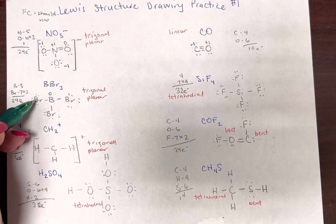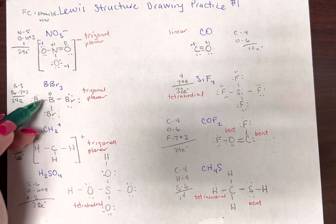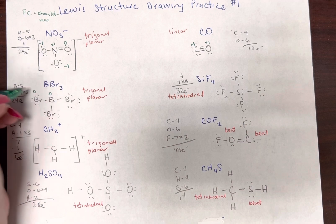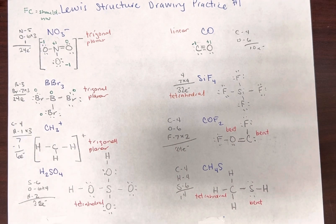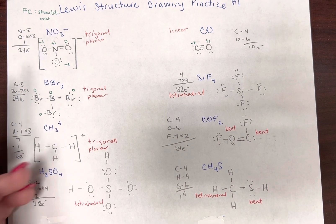So bromine brings in seven. It has one, two, three, four, five, six, seven. Seven minus seven is zero. Same thing with this one, same thing with this one.